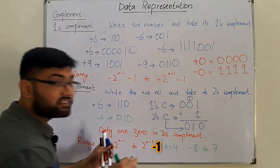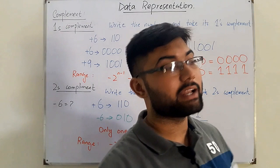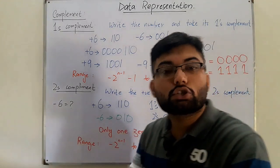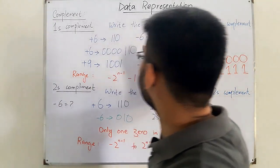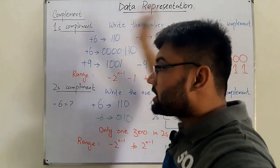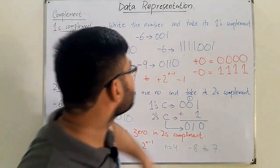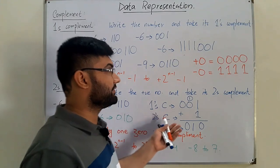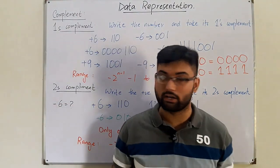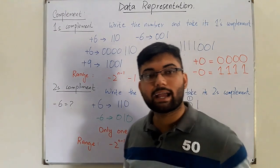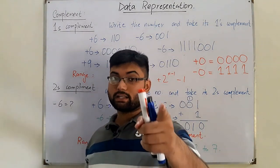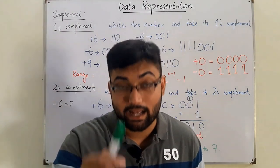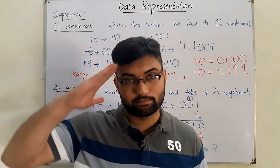If you are given a negative number in two's complement form and asked to convert it to positive, just take the two's complement again to get the positive value. Similarly, if a number is in one's complement form and you need the positive, just take the one's complement. That is how we represent negative numbers in binary using sign magnitude, one's complement, and two's complement. That's all for today — see you in the next lecture, inshallah. Take care, do subscribe to the YouTube channel and follow us on Facebook. Goodbye.